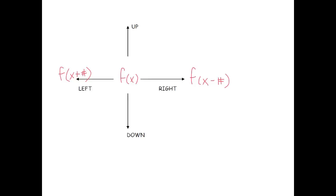That might seem a little strange — almost like the opposite of what you'd think. We'll talk more in class about why that happens. For up and down: if I want to move something up, I take the original function f of x and add the amount of spaces to the end. When we move something down, we subtract the amount of spaces. Notice that the placement is different: for left and right we change the x values, and for up and down we change the y values.